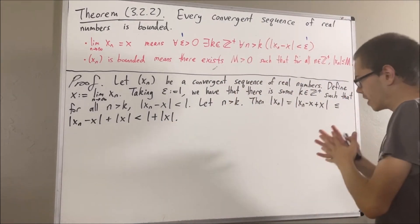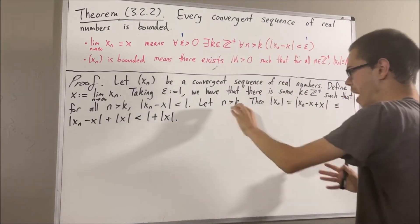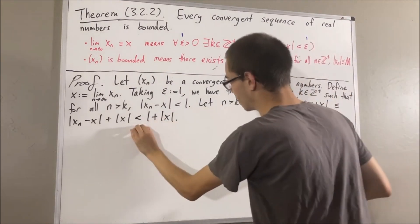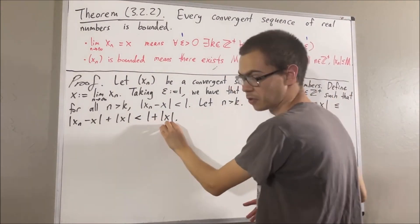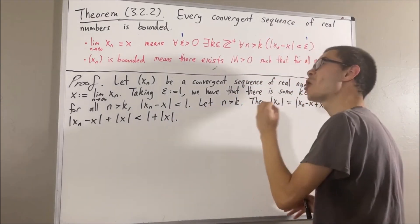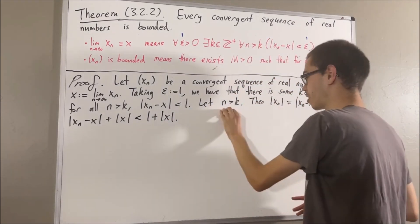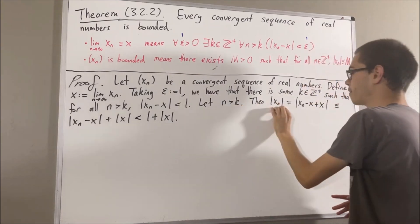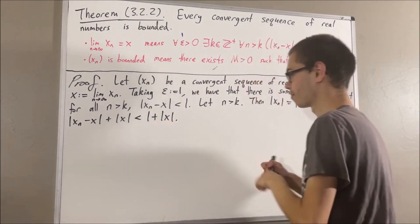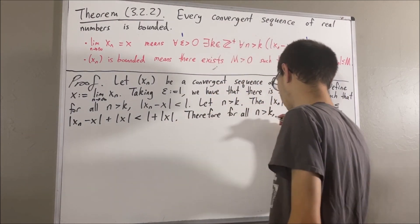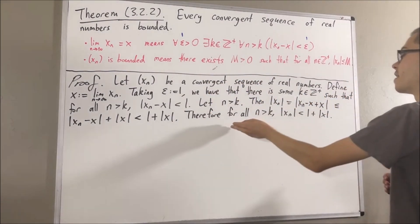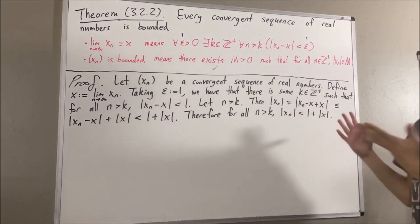Putting this together, we see that under the assumption n is greater than k, the absolute value of xn is less than 1 plus the absolute value of x. Since n was arbitrary, this means we have shown: for all positive integers n greater than k, the absolute value of xn is less than 1 plus the absolute value of x. This fact will be useful in our proof.